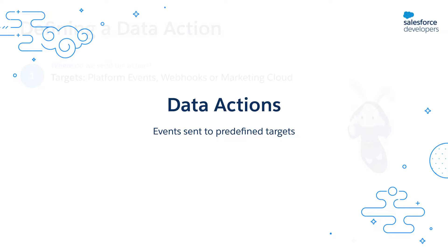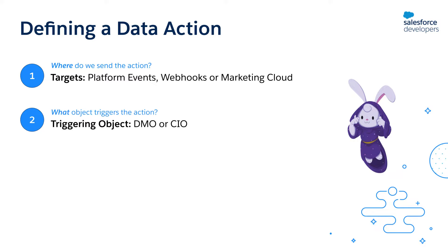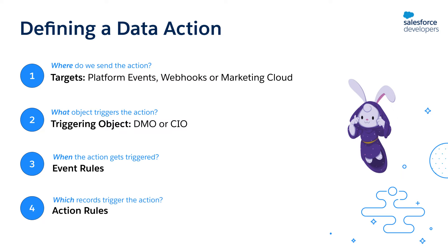When defining a data action, you need four things. First, a target which defines where the event has to be sent. There are currently three targets supported: platform events, webhooks, and marketing cloud. You will have to set up these targets before creating the data action. Next, you need to define what object triggers this action — it can either be a data model object or a calculated insights object. Next, you specify event rules that define when the action is fired, whether it is fired when a record is created, updated, or deleted. And finally, you define action rules, which are filter conditions that define which records trigger the action.